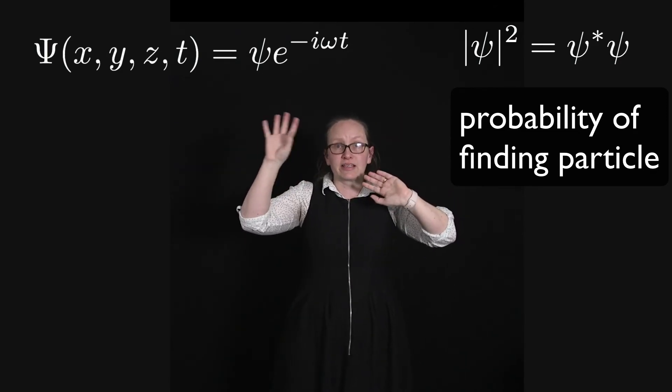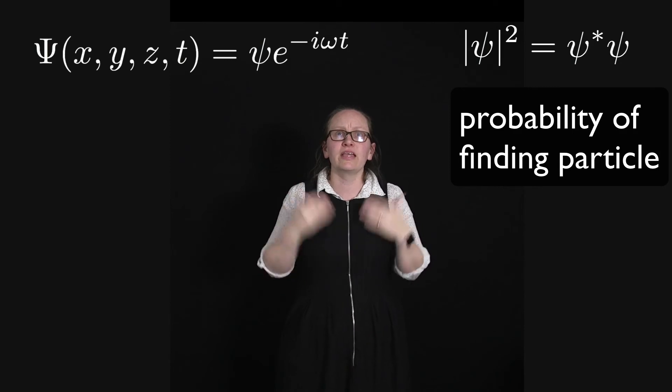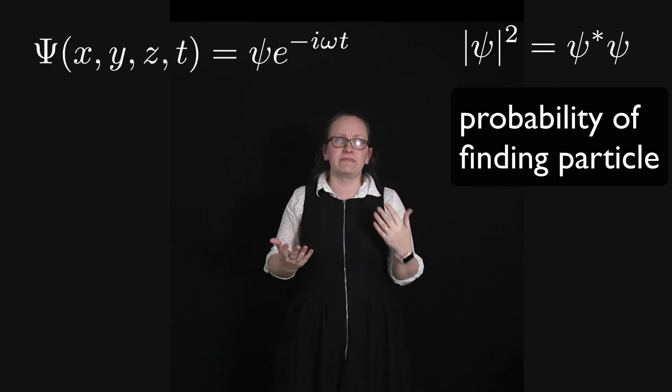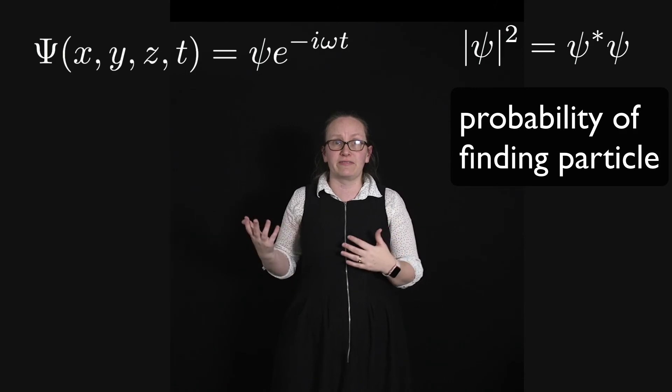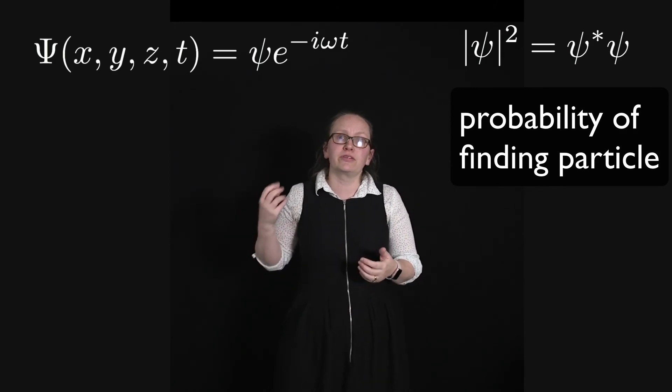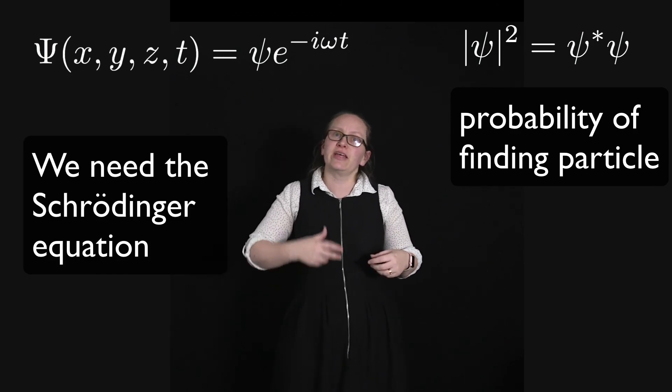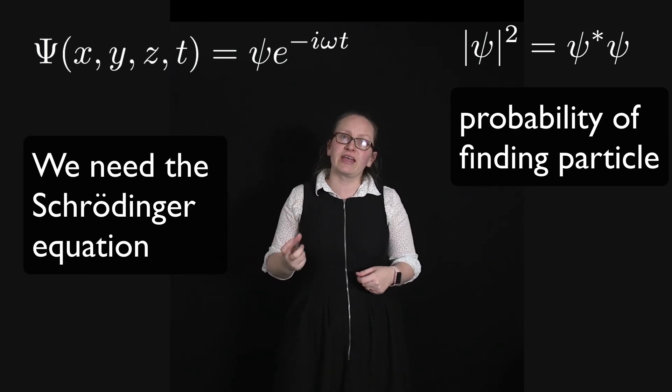Okay, so how do we go about finding what this wave function is for a specific situation? To do that we're going to need to use the Schrödinger equation. So in the next lesson we'll be looking at what the Schrödinger equation is.